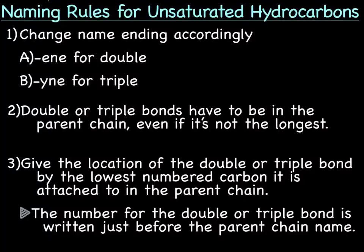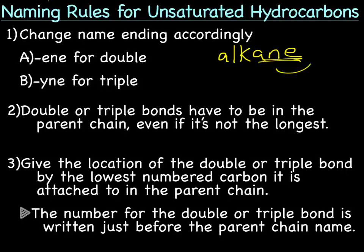So how do we name unsaturated hydrocarbons, meaning the alkenes and alkynes? Remember that for the single bonds, the alkanes, we use the prefix meth-eth-prop-but and then the ending is -ane. We're going to use the same prefixes for alkynes and alkenes.